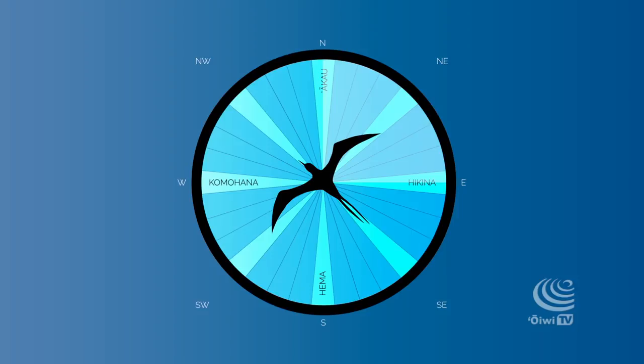If you go from north to east, in that quadrant, that is Ko'olau. Then if you go from east to south, that's going to be Malanai. And then south to west, that's going to be Kona. And then from west, back to north, 360s, that's going to be Ho'olua.